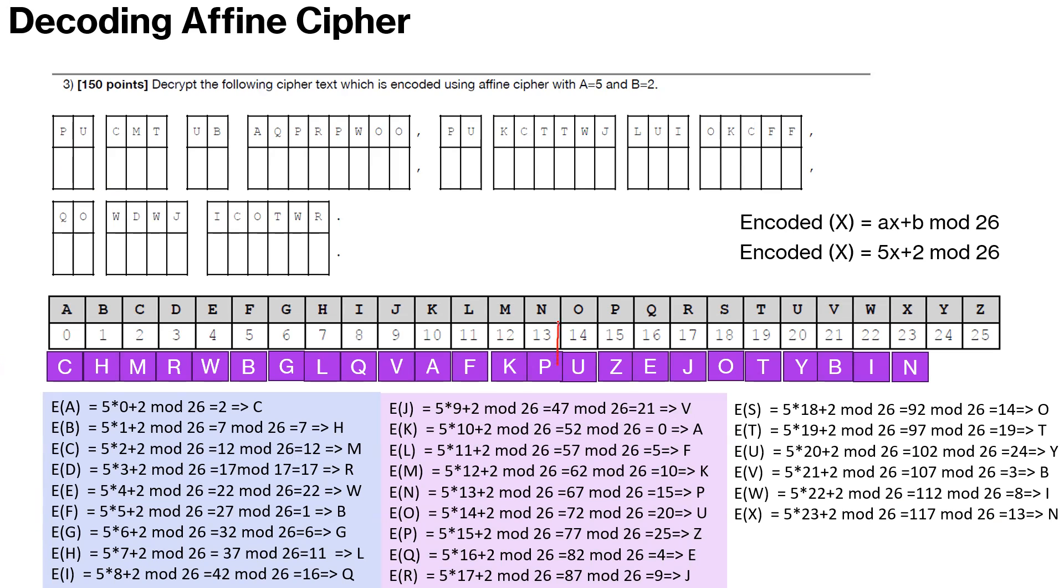Now once you get there, encoding becomes pretty straightforward. We are looking in the opposite direction. We are looking at the encoding value and from encoding we will go to the plain text. So P we get equal to N, and U is O. So from O, first one becomes NO. CMT: C is A, M is C, and T is T.